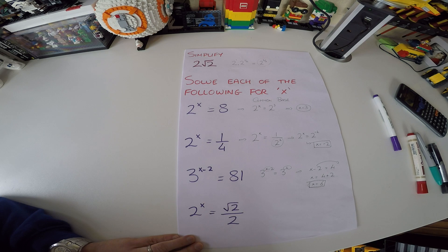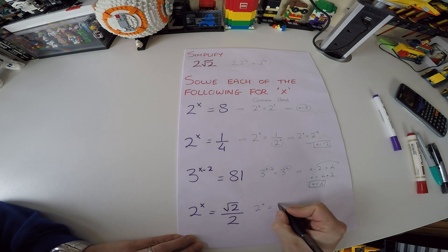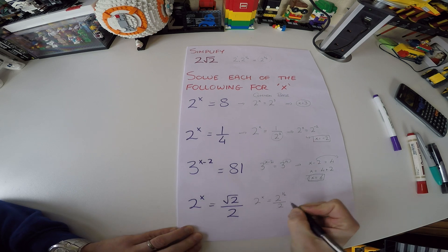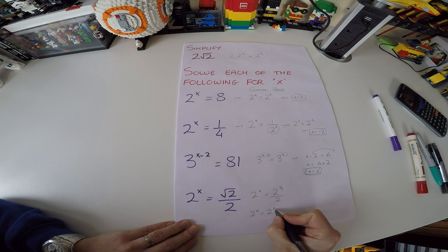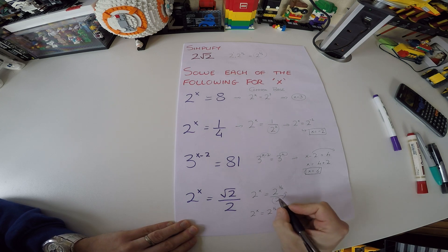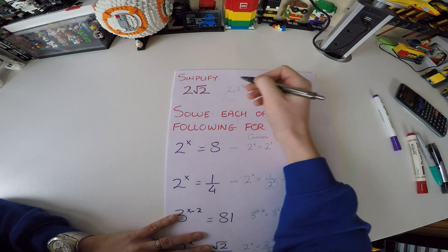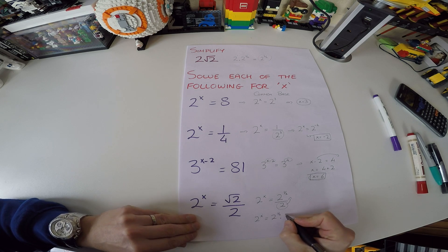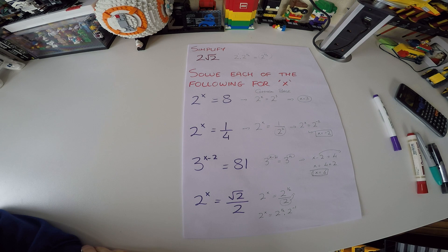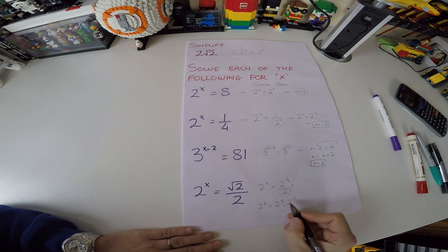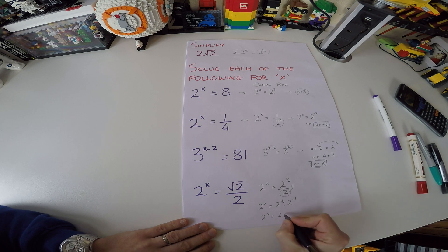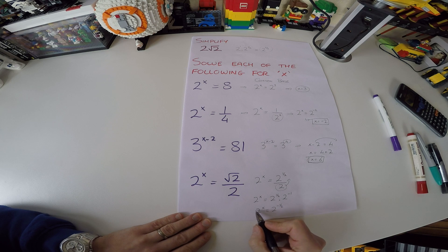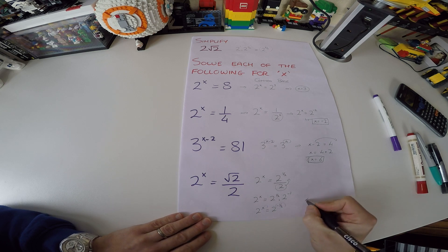Now the final one on this page: 2 to the power of x on the left, and on the right we have a square root over 2. First, change the square root to a half, giving 2 to the power of a half over 2. Then bring the denominator up — 2 on its own is 2 to the power of 1, so it becomes 2 to the power of minus 1. Now it's a multiplication problem: add the powers, a half minus 1 gives minus a half. So x equals minus a half.